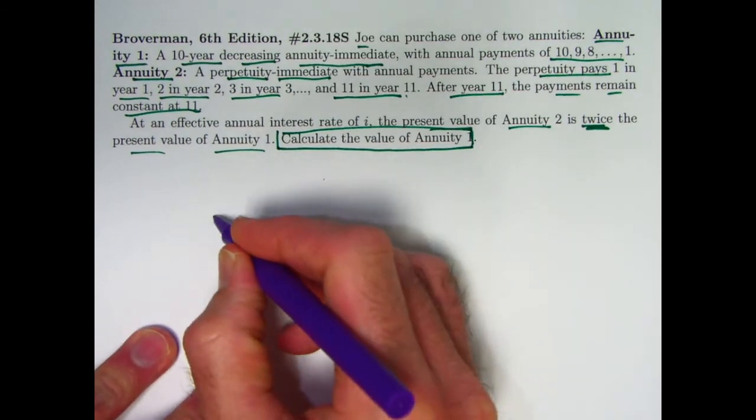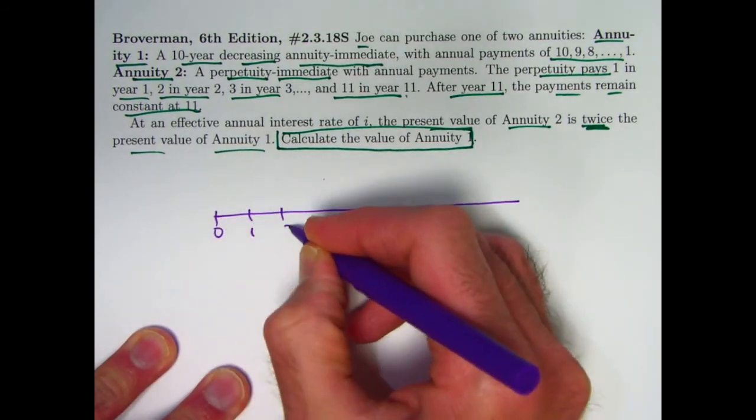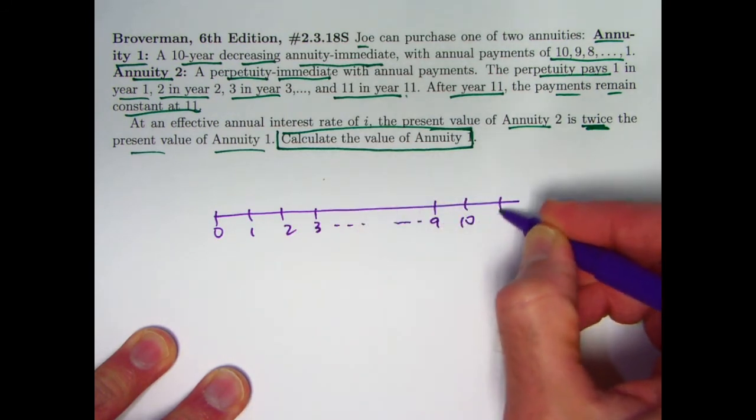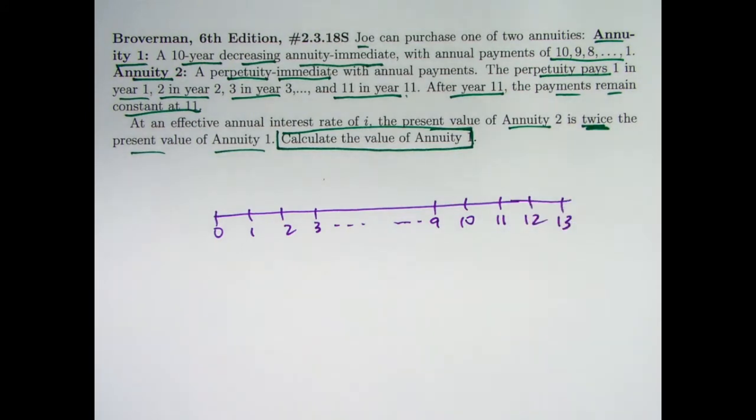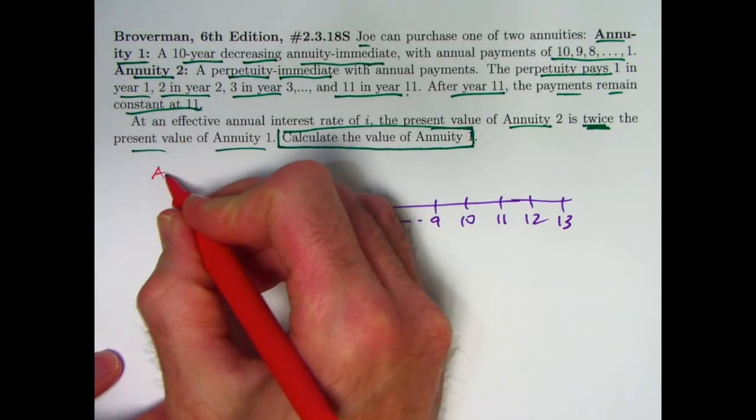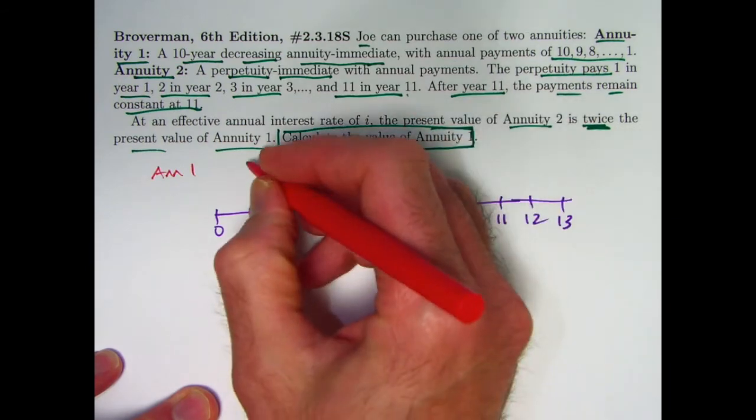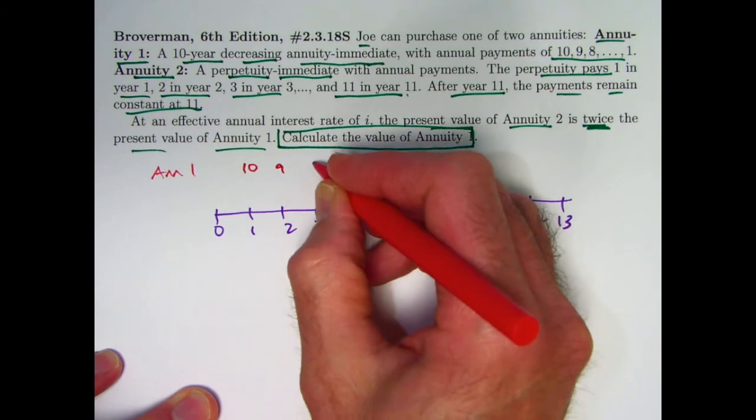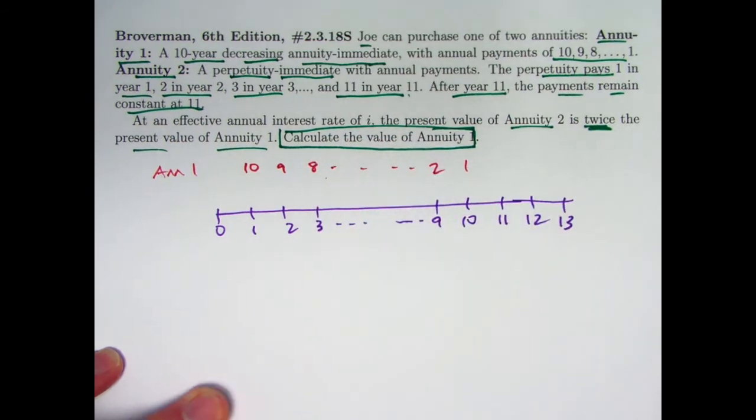So here's our timeline. Let's just put both annuities, picture both annuities on the same timeline here. So we've got annuity 1, which I'll put up higher here. Annuity 1 is the decreasing annuity immediate. First payment of 10 is at time 1. Second payment of 9 is at time 2, etc. The last payment of 1 is at time 10.